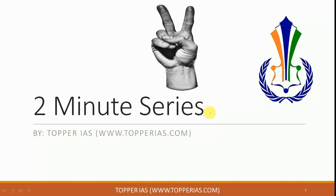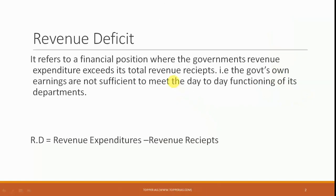Hello and welcome to the two minute series. The topic for today is revenue deficit. This is another type of deficit and an important one. Basically, this refers to a financial position where the government's revenue expenditure exceeds its total revenue receipts — that is, a government's own earnings are not sufficient to meet the day-to-day functioning of its departments.